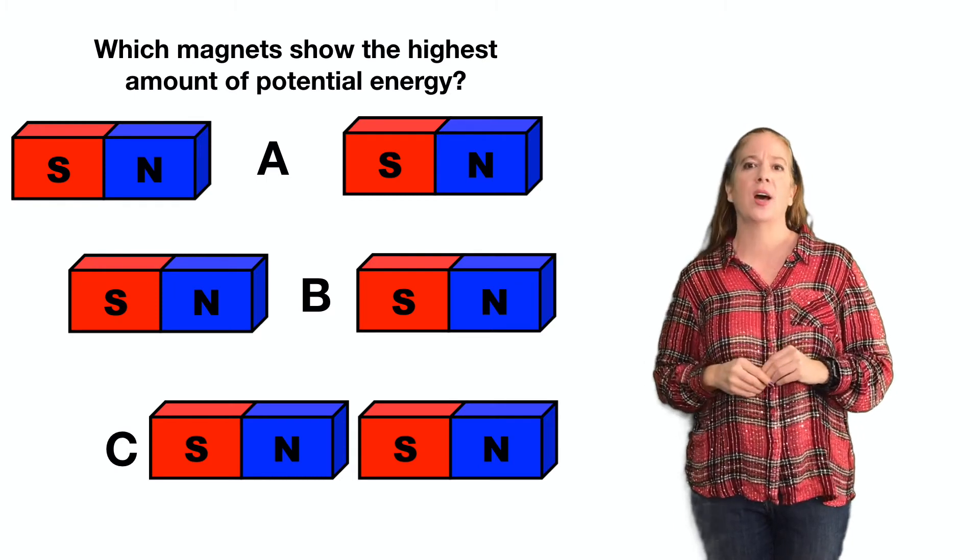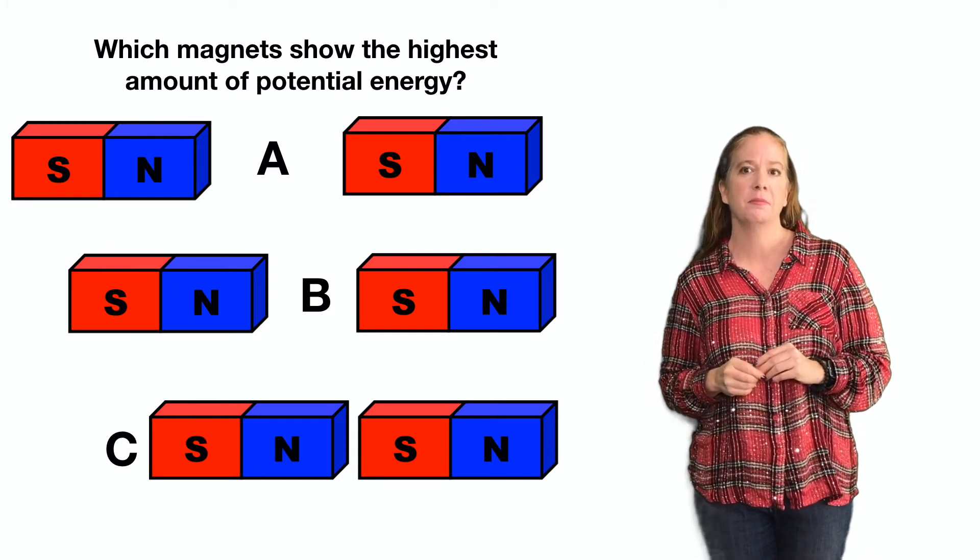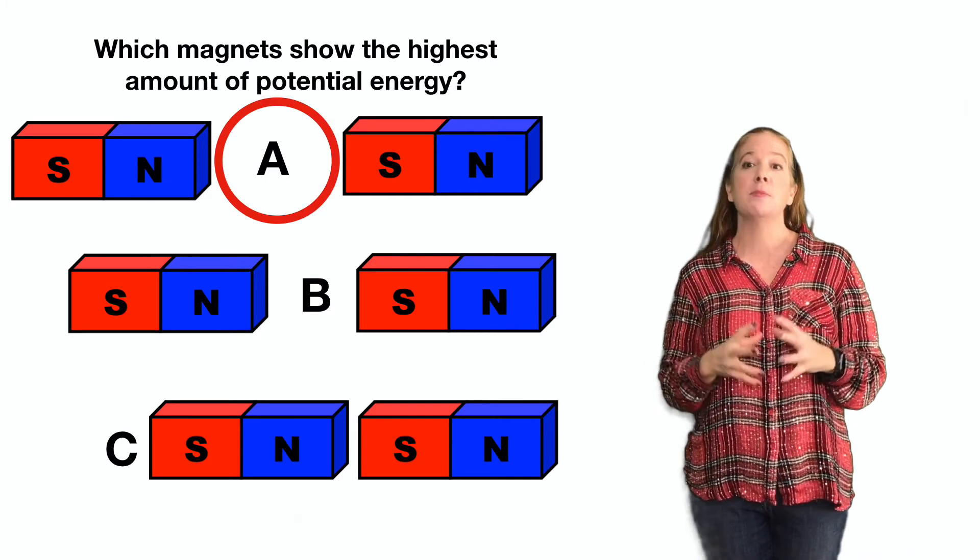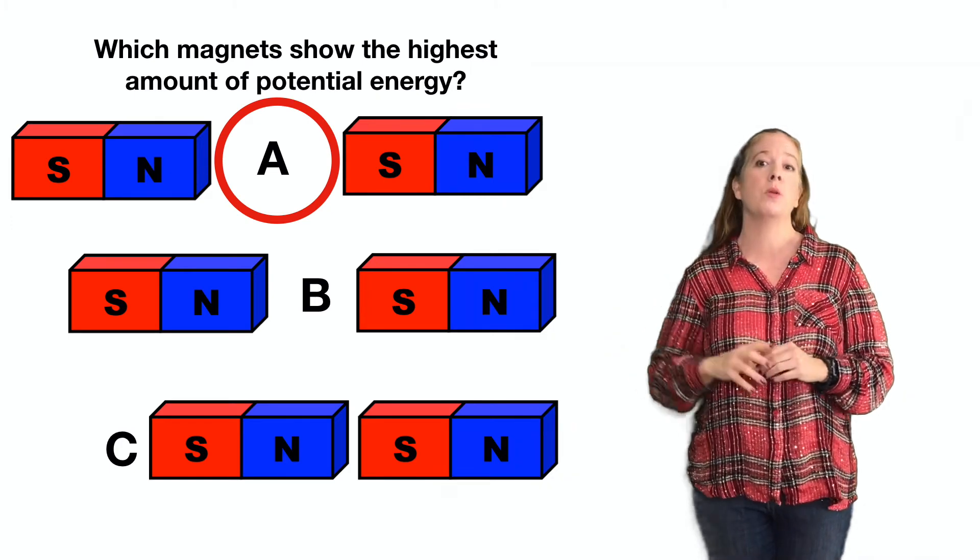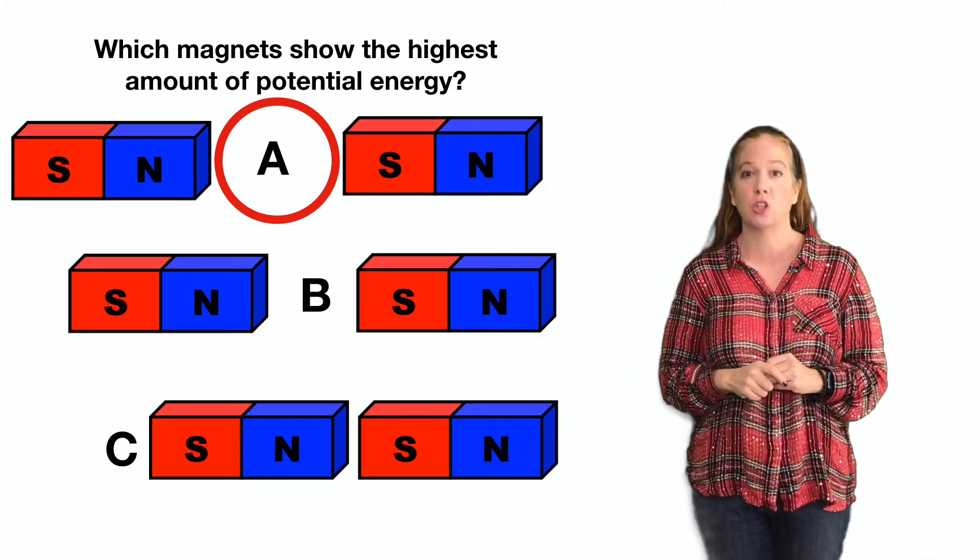Which magnets show the highest amount of potential energy? These magnets have opposite charges, so letter A would be where the potential energy is greatest.